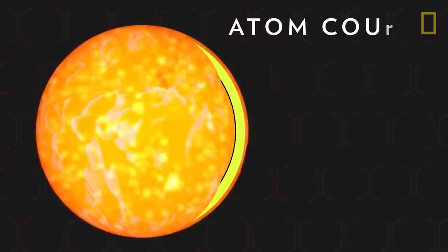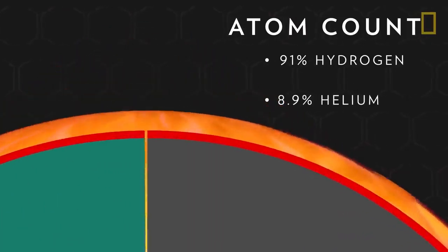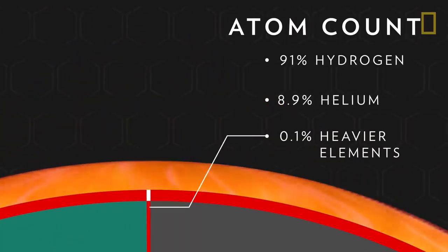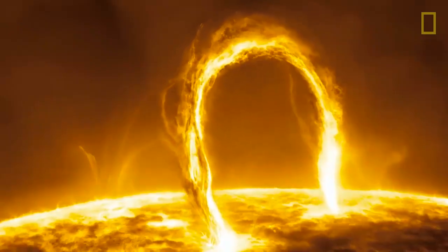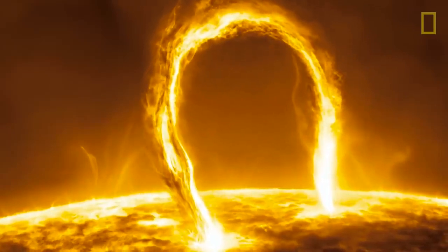In terms of atom count, the sun is about 91% hydrogen, the sun's fuel, 8.9% helium, and 0.1% heavier elements such as carbon and nitrogen. Due to the sun's extreme temperatures, these elements stay in a gas-like phase called plasma.